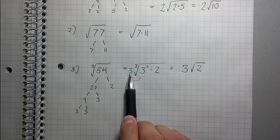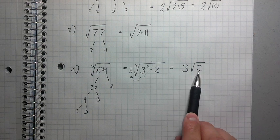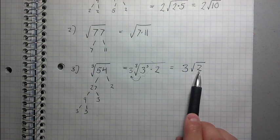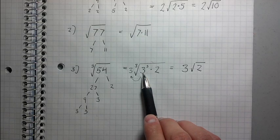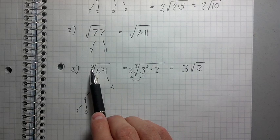So I pulled out the 3 cubed, and I was left with a 3 root 2 because 2 was the only number that was left inside when I took out the 3. So that was example 3. It just shows what happens when you have something that's not a square root.